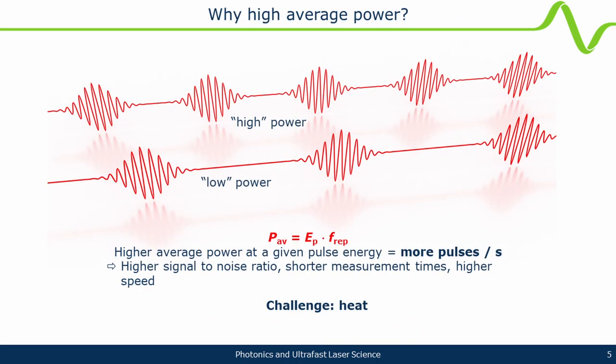Why are people interested in high average power? At a given pulse energy needed by a certain application, if you have higher average power, you simply have more pulses per second. If you have more pulses per second and you fix a certain measurement time, you're integrating over more pulses and get better signal-to-noise ratio. Or if you do single-shot experiments, you can reduce measurement time. In some spectroscopy experiments, you can get up to week-long integration times — this can really be a game changer where you're suffering from low signals.